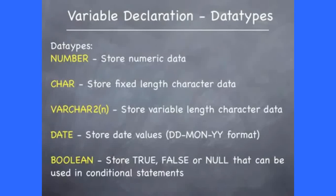The next data type is varchar2, which represents variable-length character data. A variable defined as varchar2 type must have a size. The date data type allows you to store date type of values in a dd-mon-yyyy format. In PLSQL, you can have a data type called boolean. The values taken by a boolean variable can be true, false, or null. These types of variables are used in conditional statements such as an if statement.